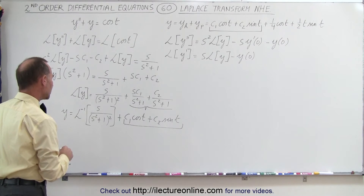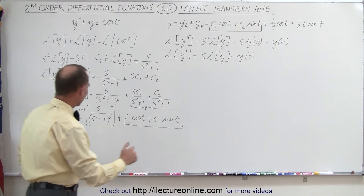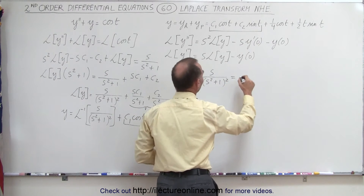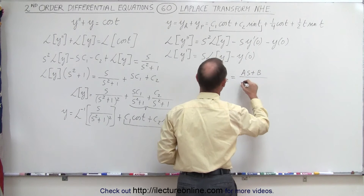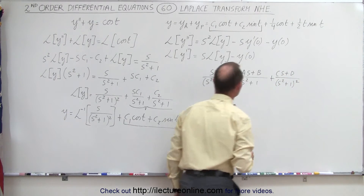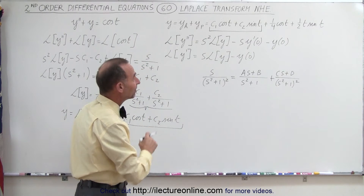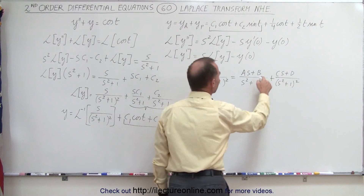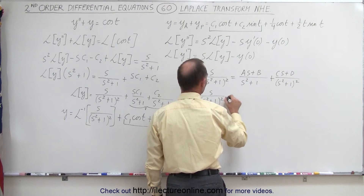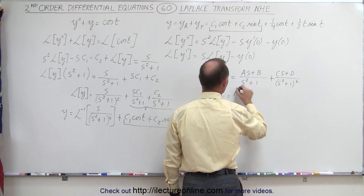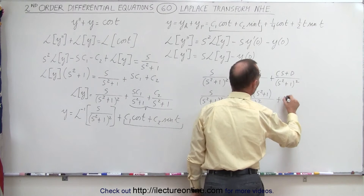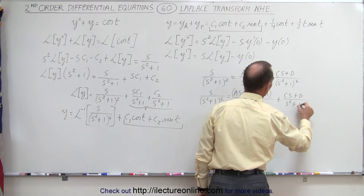Now we need the technique of partial fractions. We have s divided by (s squared plus one) squared, which can be written as (As + B) over (s squared plus one) plus (Cs + D) over (s squared plus one) squared. Multiplying through by (s squared plus one), we get s over (s squared plus one) squared equal to (As + B)(s squared plus one) over (s squared plus one) squared, plus (Cs + D) over (s squared plus one) squared.